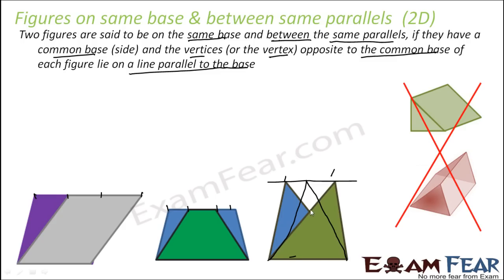You can see that all three triangles lie on the same base and between the same parallels. You might wonder why we study this — it's because figures on the same base and between the same parallels have the same area. That's a significant result: just by confirming they share the same base and parallels, you can conclude they have equal area. We will understand that in more detail later.